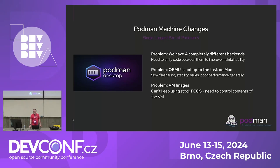The second big problem: our Mac support was really lacking. QEMU was just not up to the task — it was our only supported driver at that point, and we knew we needed a major rewrite to get off it due to serious stability issues. The third problem was virtual machine images. We were on FCOS, and while Fedora CoreOS was generally good, we had to customize those images and didn't have an easy way to do it. We were running RPM scriptlets on first boot to remove and add packages, exploding our boot time.